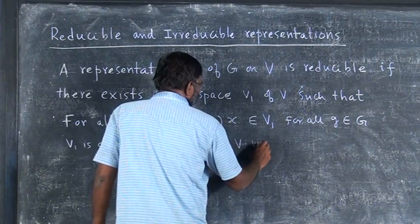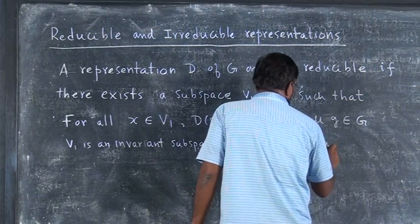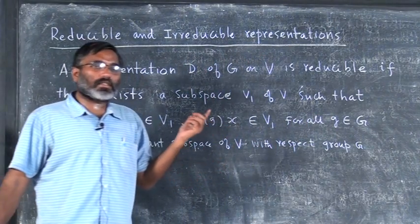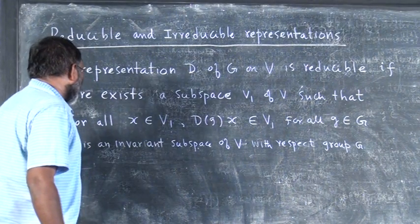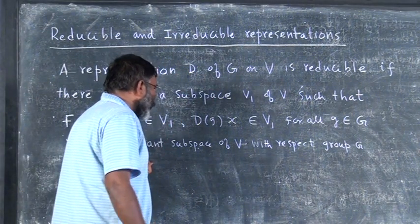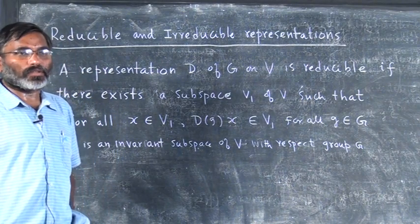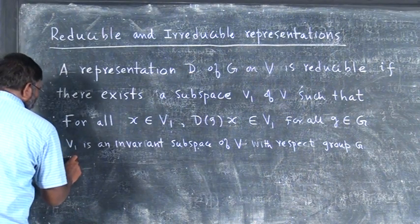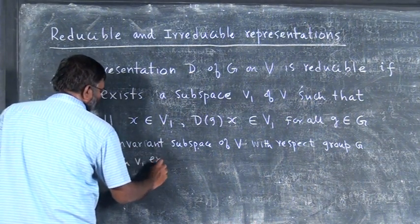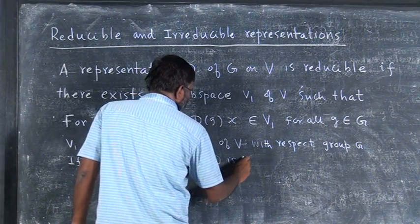V1 is an invariant subspace of V with respect to group G, because it is the representations of this group that are leaving this subspace invariant. So if you have a vector space on which a representation is defined, and if you can find an invariant subspace, then you say that representation is reducible. If you cannot find any such invariant subspace, it is irreducible. If no such V1 exists, then D is irreducible.